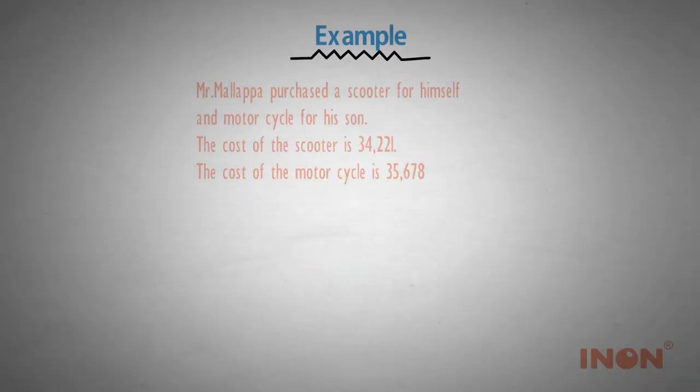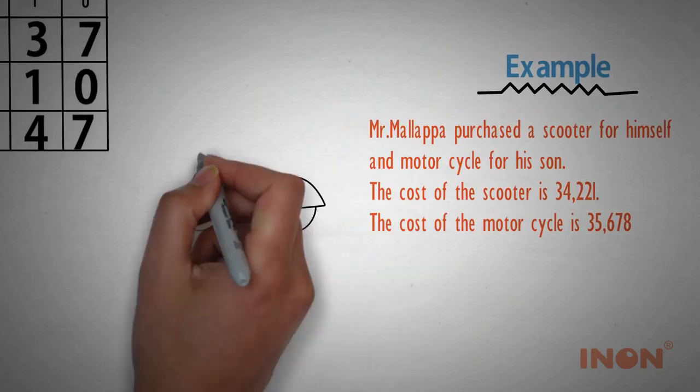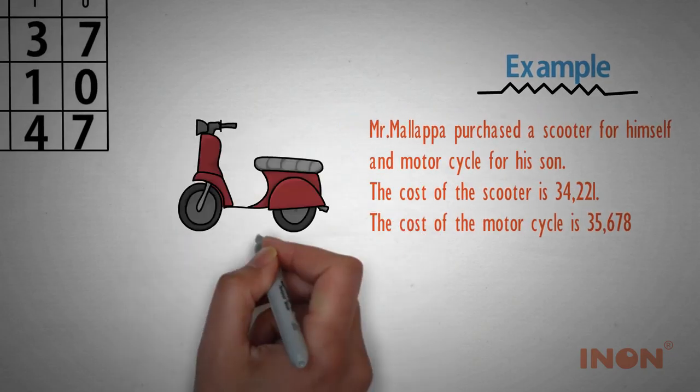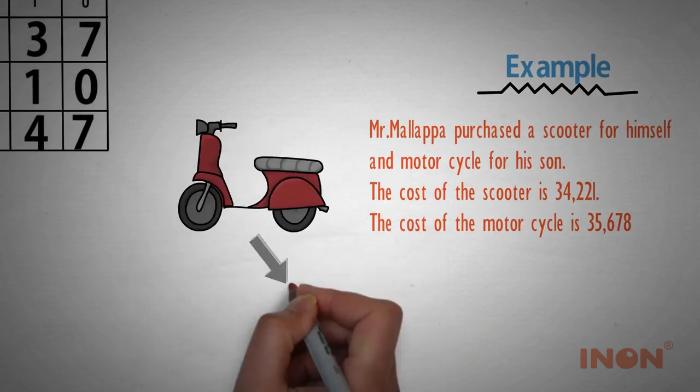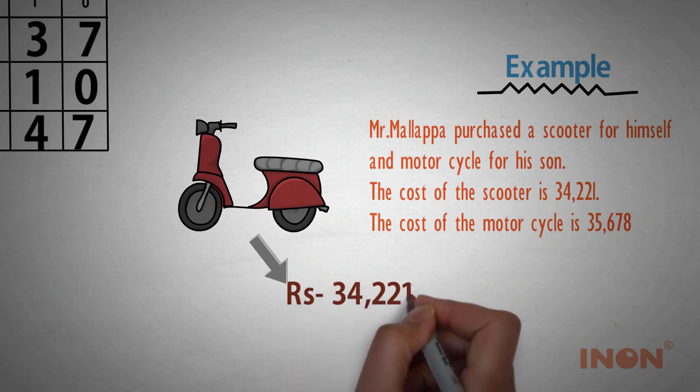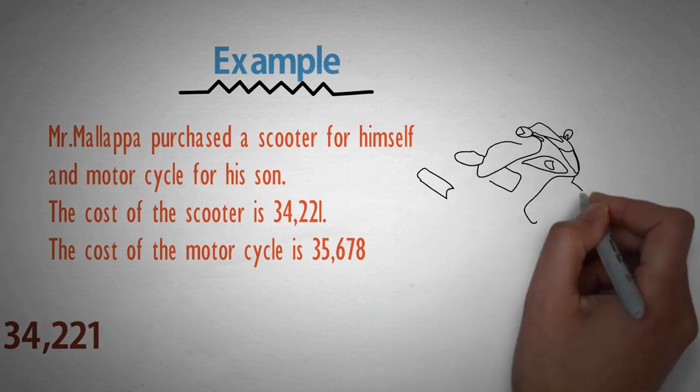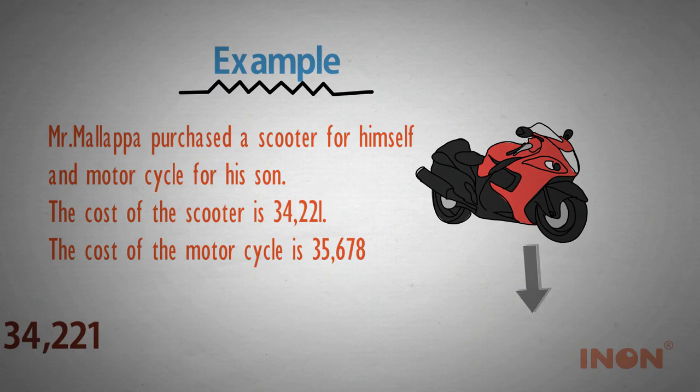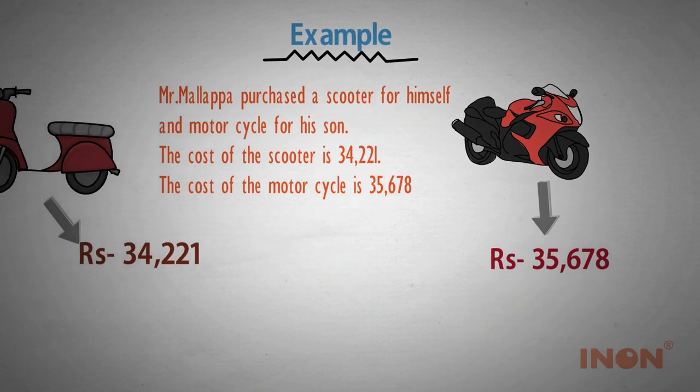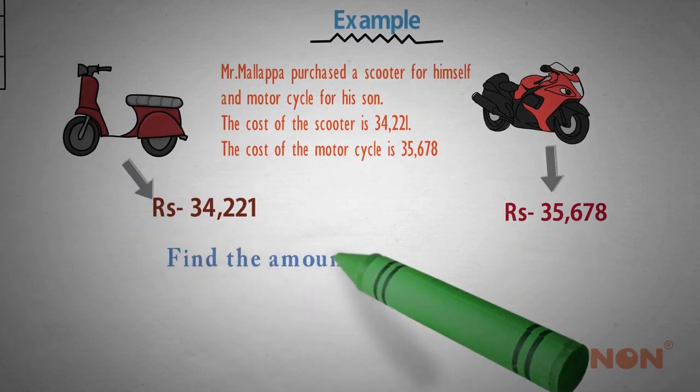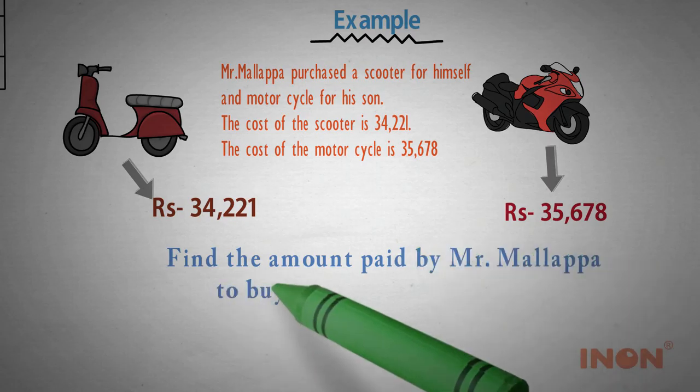For example, Mr. Mallappa purchased a scooter for himself and a motorcycle for his son. The cost of the scooter is 34,221. The cost of the motorcycle is 35,678. Find the total amount paid by Mr. Mallappa to buy the scooter and motorcycle.